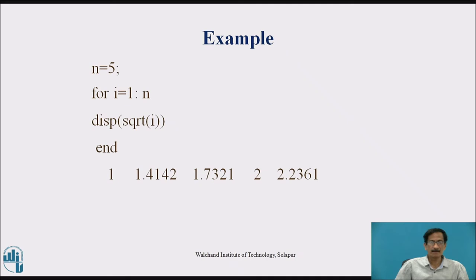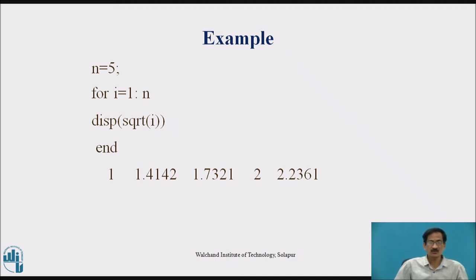Now another example: n equals to 5, for i equals to 1 colon n, display square root of i. We are using two brackets here — one bracket for displaying the quantity, that is the square root of i. Initially it displays square root of 1 which is 1, then square root of 2 which is 1.4142, then square root of 3 which is 1.7321, square root of 4 which is 2, and finally square root of 5 which is 2.2361.